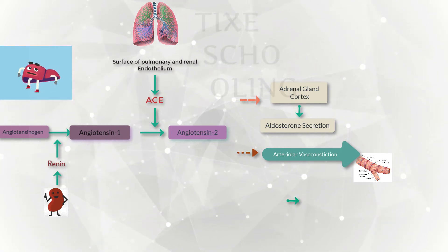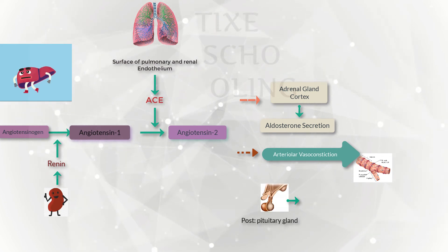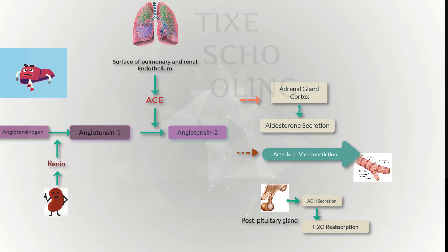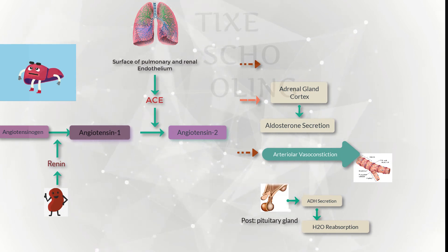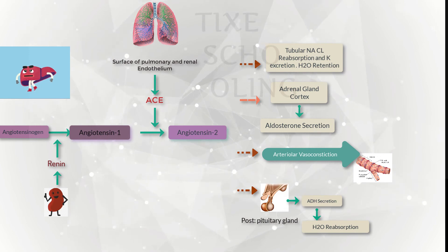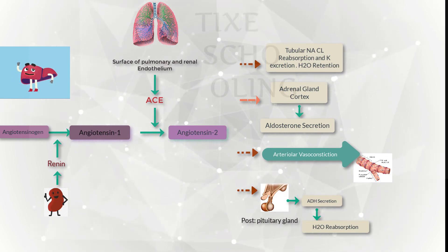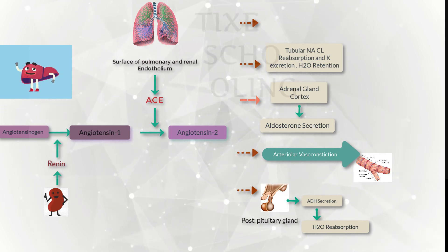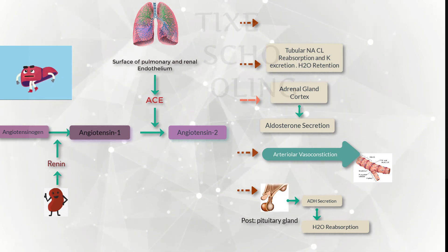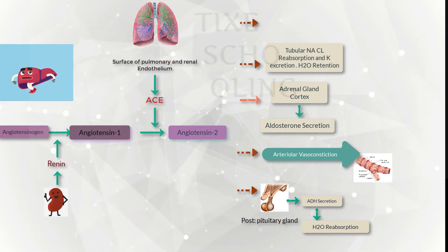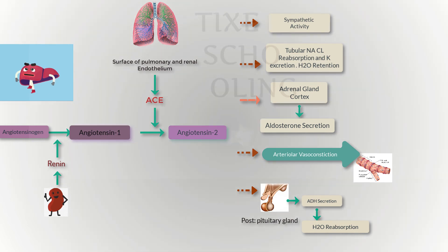Angiotensin-2 causes the posterior pituitary gland to secrete ADH, which helps in water reabsorption. Angiotensin-2 also causes tubular sodium chloride reabsorption and potassium excretion, and helps in water retention, similar to ADH secretion which also helps in water reabsorption.